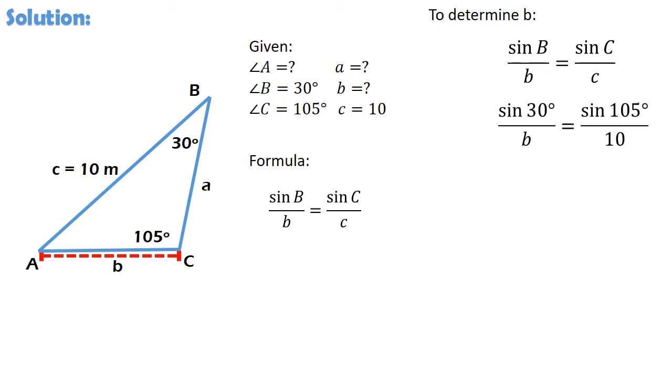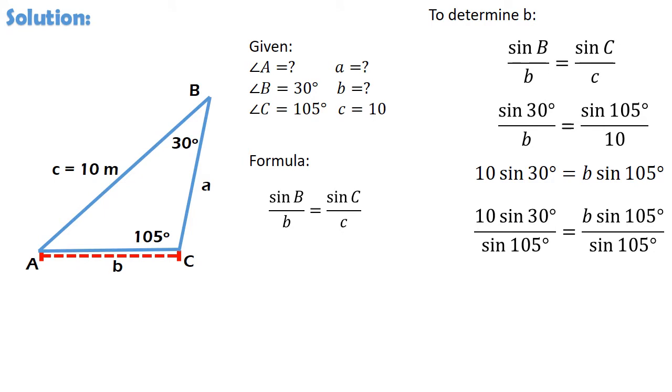Yung next line natin, we just substituted the values from the given kaya meron tayong sin 30 degrees over b is equal to sin 105 degrees over 10. Yung next line naman, we just cross-multiplied 10 to sin 30 degrees. Yung b naman, kinross-multiplied din natin sa sin 105 degrees. Kaya kung mapapansin ninyo, yung next line natin ay hindi na in fraction form. Dahil ang pinapahanap naman sa atin ay ang value ng b, kailangan natin i-cancel out ang sin 105 degrees sa right side of the equation. And to do that, kailangan natin i-divide ang both sides of the equation by sin 105 degrees. So, cancelling out sin 105 degrees on the right side of the equation, ang naiwan na lang ay b. And to solve for b, we have 10 times sin 30 degrees all over sin 105 degrees.